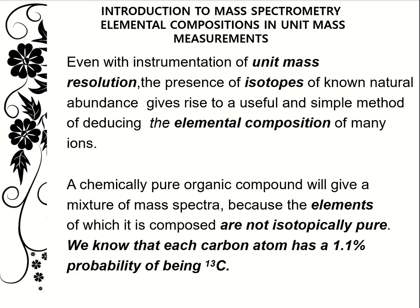Even with instrumentation of unit mass resolution, the presence of isotopes of natural abundance gives rise to a useful and simple method of deducing the elemental composition of many ions. A chemically pure organic compound will give a mixture of mass spectra because the elements of which it is composed are not isotopically pure. For example, a carbon atom has a 1.1% probability of being carbon-13.